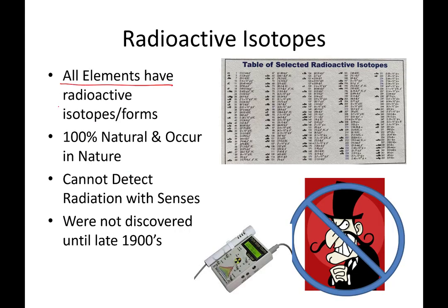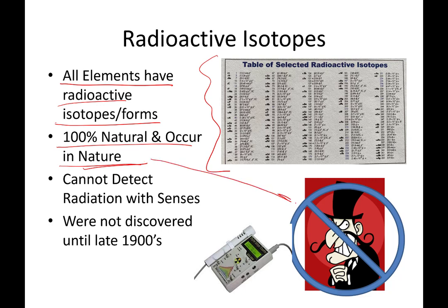All atoms, all elements, have radioactive forms — radioactive isotopes — and on the periodic table we've been using throughout the course, there is a chart of some common radioactive isotopes. Radiation is 100% natural. It has been around since the beginning of time and will be around till the end of time. This is not something that mankind produced like some evil scientist messing with the inside of atoms.